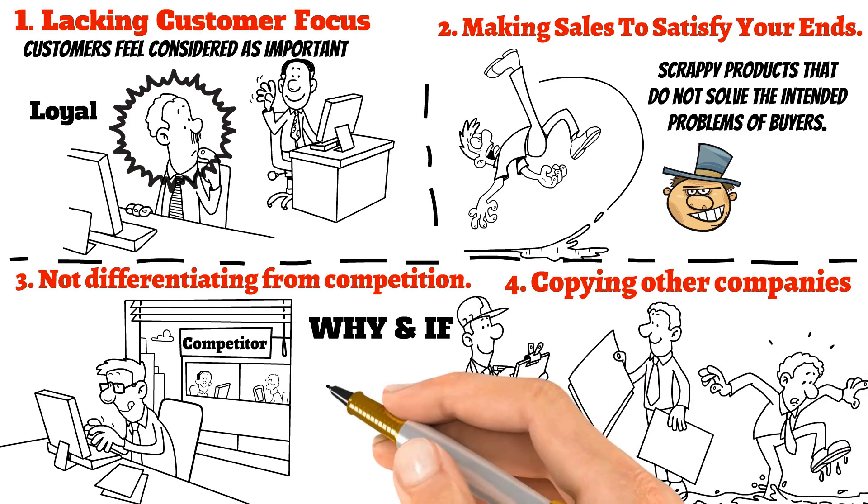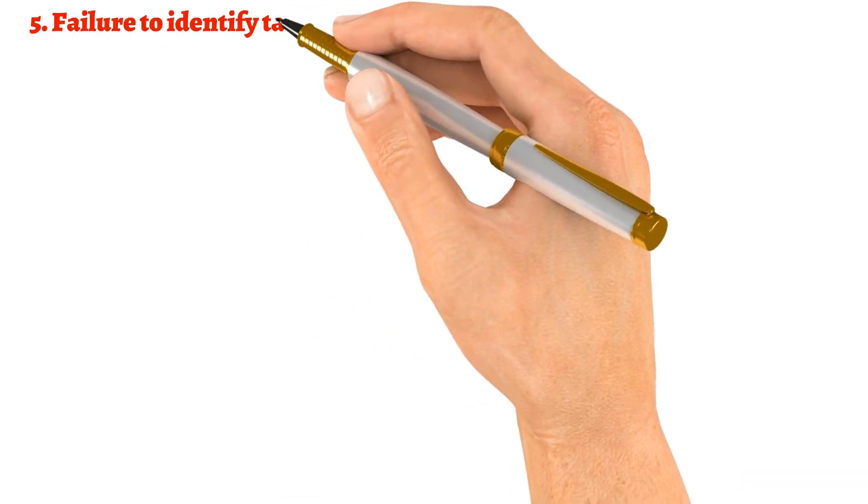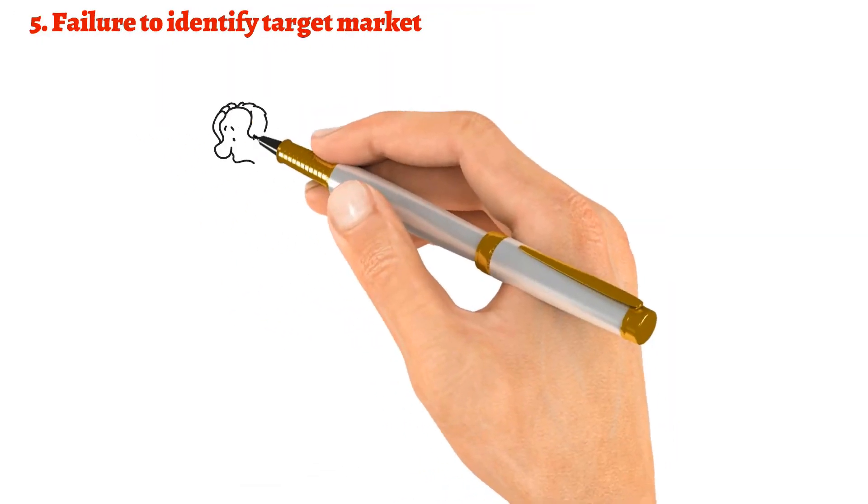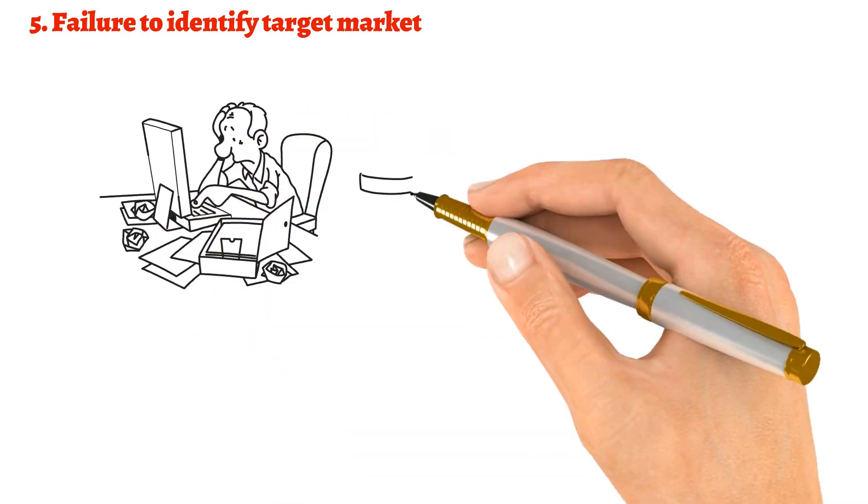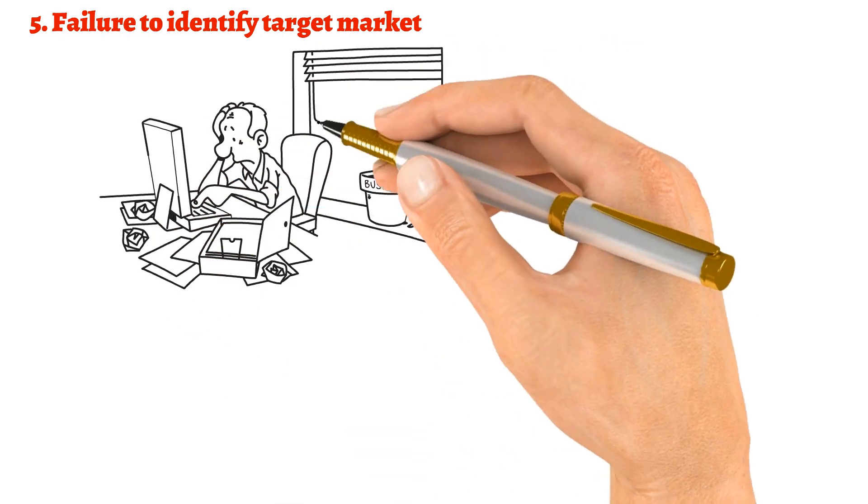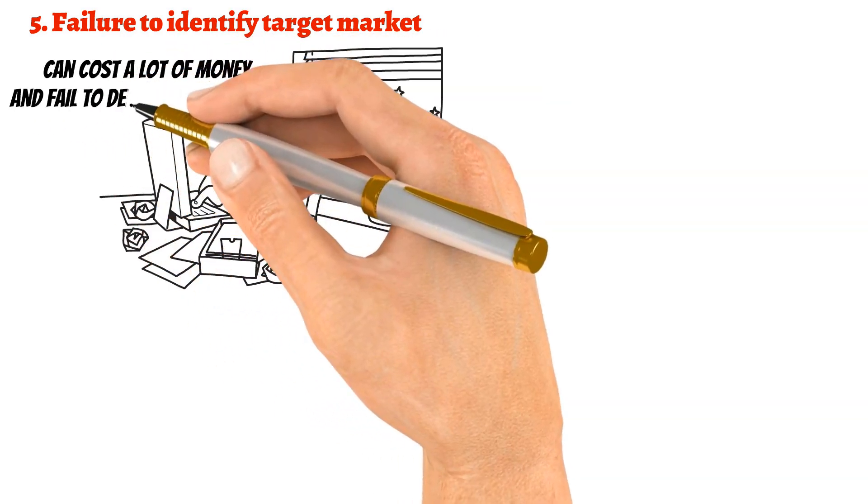Number five: failure to identify a target market. Many small business owners make the mistake of trying to target everyone rather than focusing on a specific target market. This scattergun approach to marketing can cost a lot of money and fail to deliver a positive return on your investment.